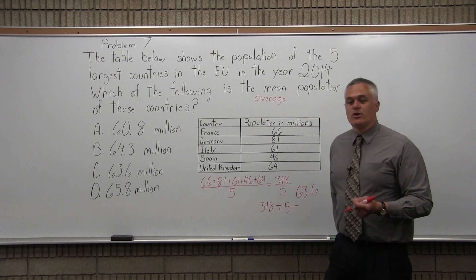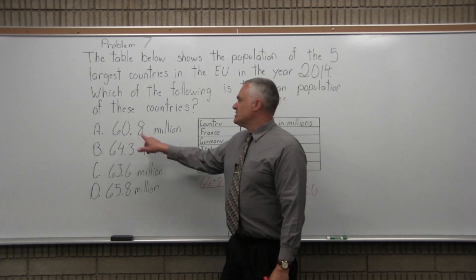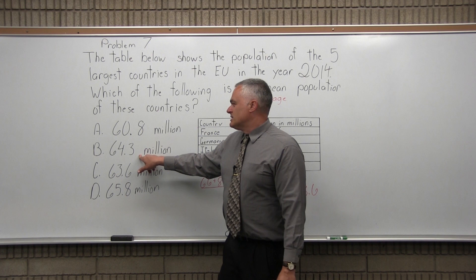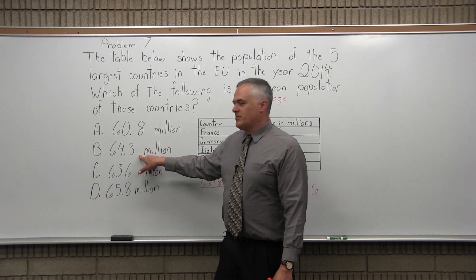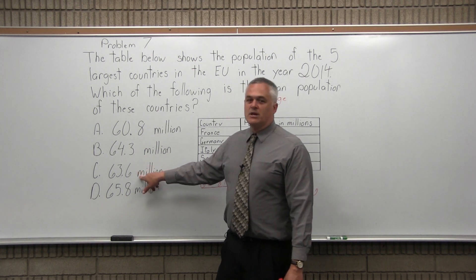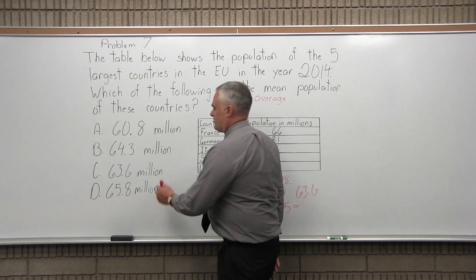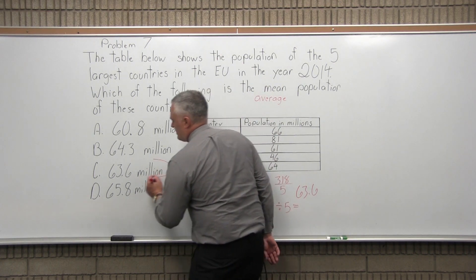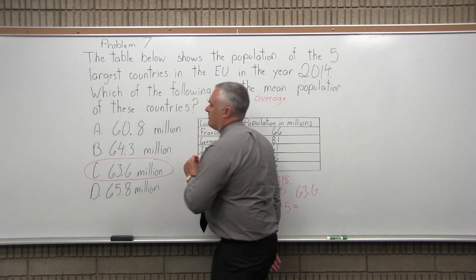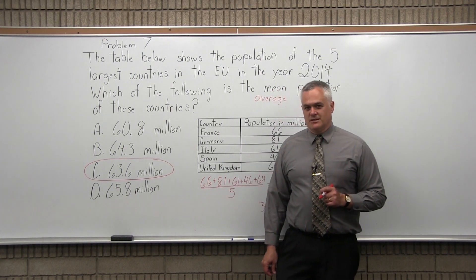Now, let's see — is that one of the options? Option A: 60.8 million? No. Option B: 64.3 million? No. Option C: bingo, 63.6 million. It is an exact match for our answer. Therefore, it must be the solution to this problem. The answer to number 7 is Option C.